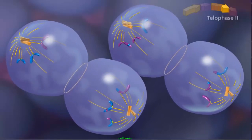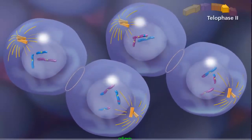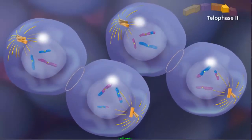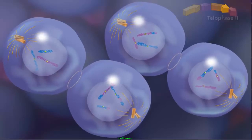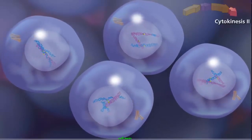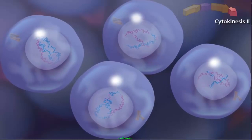The entire process ends with telophase II, as the chromosomes decondense and the nuclear envelope reforms. Cytokinesis occurs and cleavage furrows separate the two daughter cells into four haploid daughter cells.